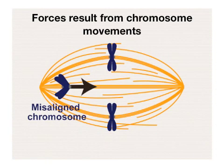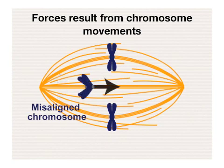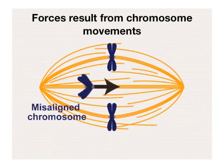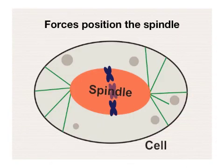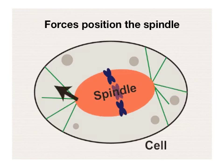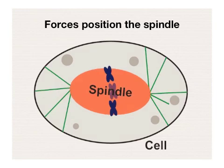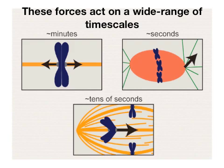When a chromosome moves from one end of the spindle to its middle, this motion also generates forces that result in deformations in the dense microtubule network of the spindle. And finally, forces act on the spindle to control its position and orientation inside the dividing cell. These forces not only act at different sites within the metaphase spindle and in different directions, they also act on a wide range of timescales.